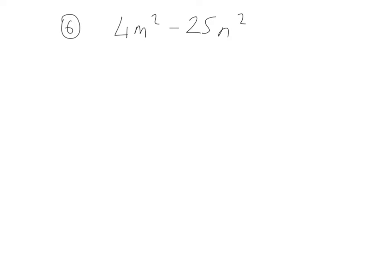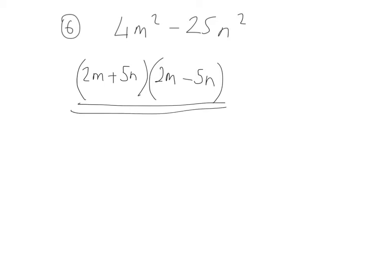Example 6: factorise 4m squared minus 25n squared. First of all, check for the highest common factor — but there's not one to take out. So it's straight to a difference of two squares: bracket with a plus, bracket with a minus. The square root of 4m squared is 2m, and the square root of 25n squared is 5n. Final answer: 2m plus 5n, bracket 2m minus 5n.